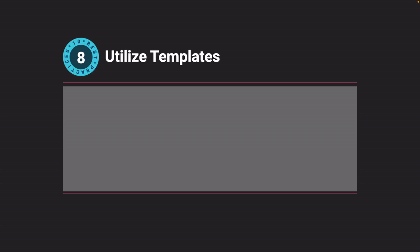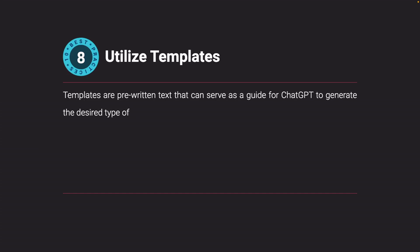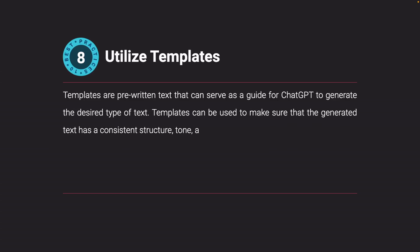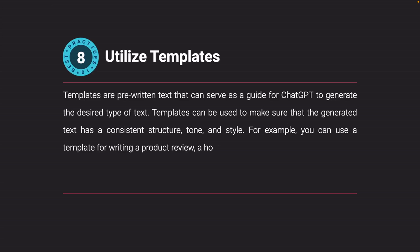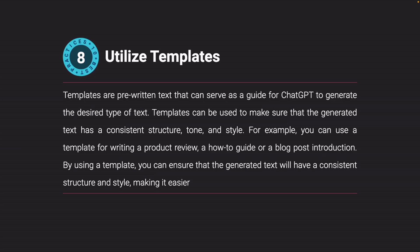Utilize templates. Templates are pre-written text that can serve as a guide for ChatGPT to generate the desired type of text. Templates can be used to make sure that the generated text has a consistent structure, tone, and style. For example, you can use a template for writing a product review, a how-to guide, or a blog post introduction. By using a template, you can ensure that the generated text will have a consistent structure and style, making it easier to edit and polish before publishing.